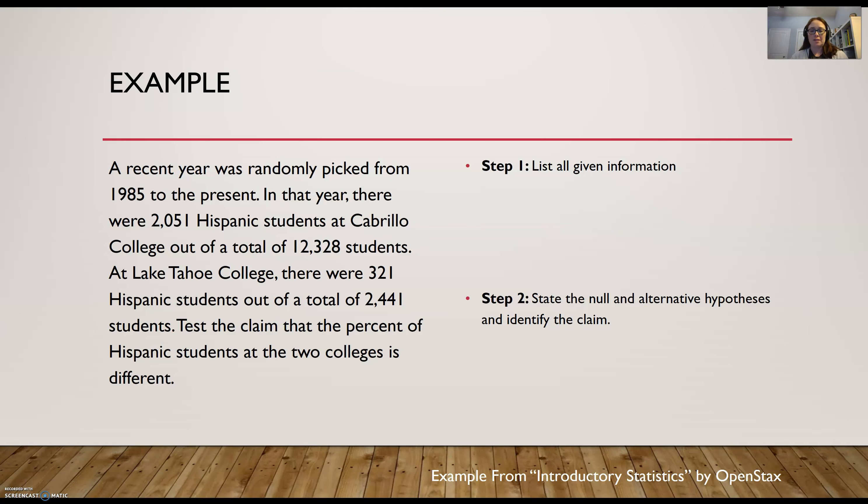So let's run through an example using our six-step process. A recent year was randomly picked from 1985 to the present. In that year, there were 2,051 Hispanic students at Cabrillo College, out of a total of 12,328 students. At Lake Tahoe College, there were 321 Hispanic students, out of a total of 2,441 students. Test the claim that the percent of Hispanic students at the two colleges is different.